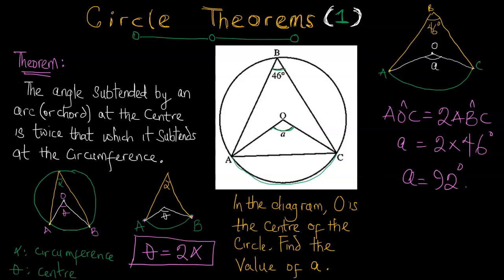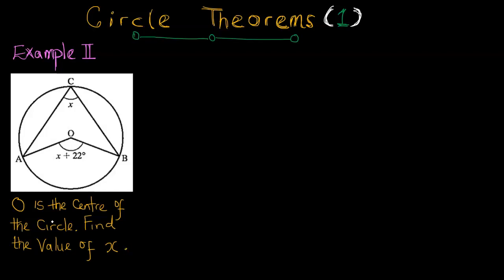Let's take the second one. In this example we are also told that O is the center of the circle; find the value of x. We've got an arc AB — these are the sources A and B. From the first source, the radius goes to the center, and from the second source the radius goes down, and we see that arc AB subtends an angle of (x + 22) degrees at the center. From the first source taking it to the circumference and the second source, the angle subtended at the circumference is x. Relying on the theorem, the angle an arc subtends at the center is twice that which it subtends at the circumference.